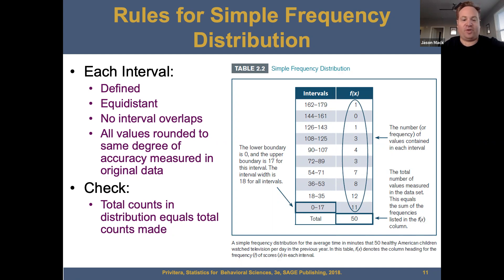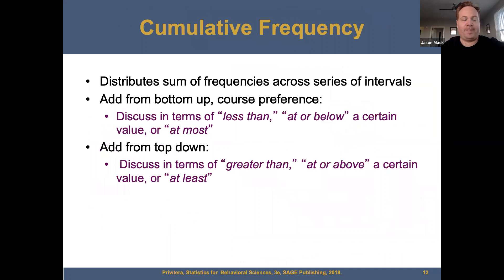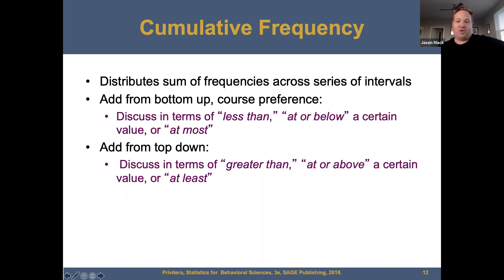A simple frequency distribution for the average time in minutes that 50 healthy American children watch television per day. X, the function of X, denotes the column heading for the frequency of scores for each individual. Cumulative frequency distributes the sum of frequencies across a series of intervals — add from the bottom up. This is discussed in terms of less than, at or below a certain value, or at most. Add from the top down, discussed in terms of greater than, at or above a certain value, or at least.